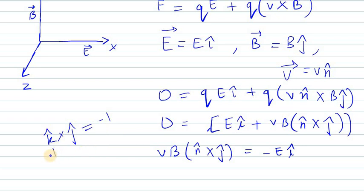Therefore, n̂ should be k̂ to have equal values on both sides. Remember: k̂ × ĵ = -î.